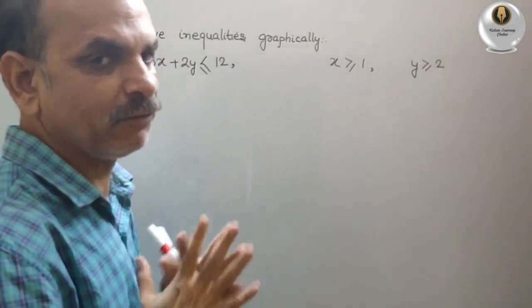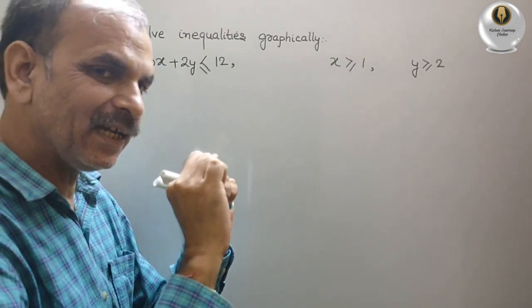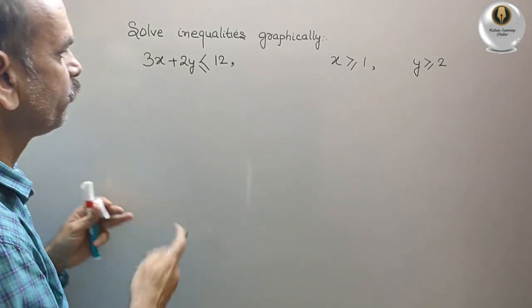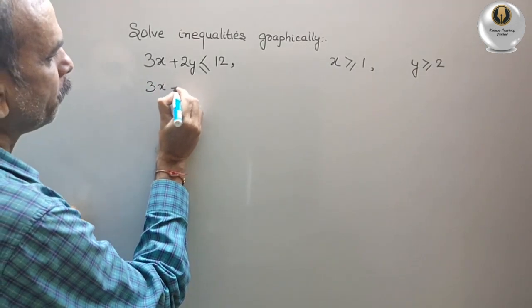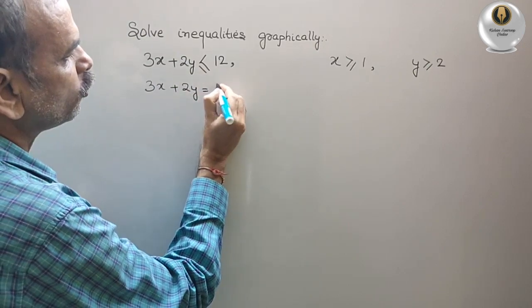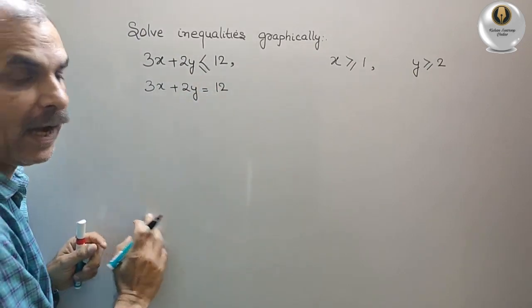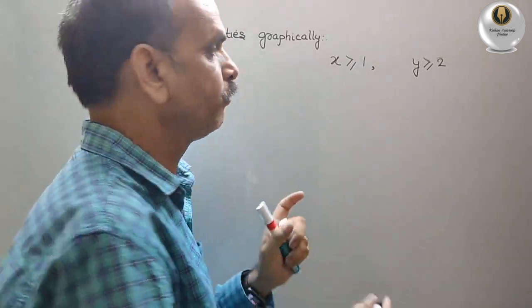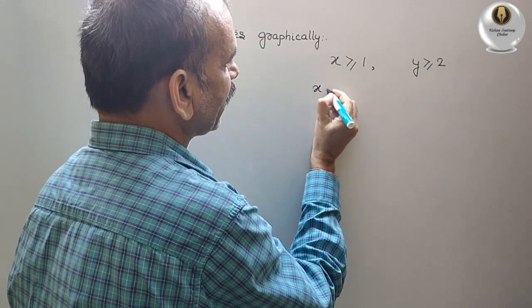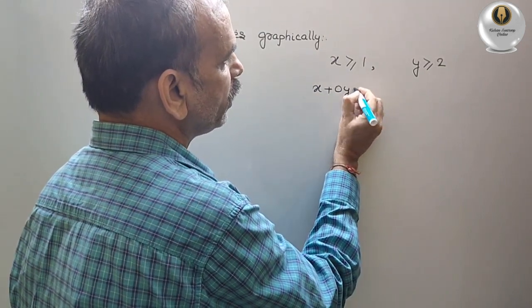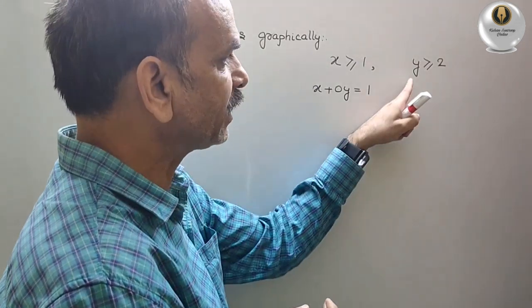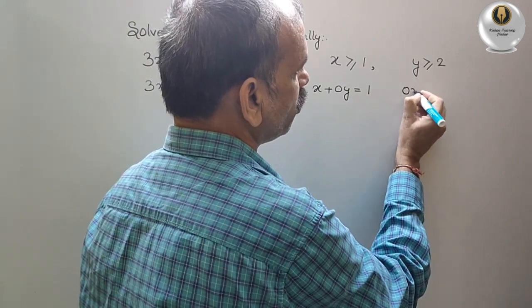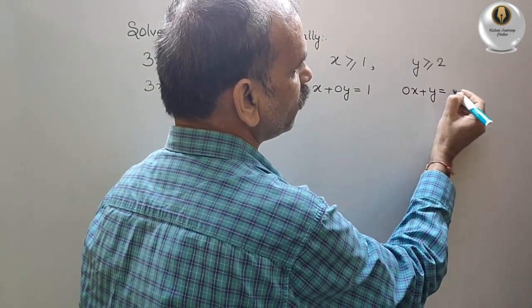They have given three equations, so first we will write them in linear form. 3x plus 2y is equal to 12. Here they have not given y, so we will take 0y — so it is x plus 0y is equal to 1. And here they have not given x, so we will take 0x: 0x plus y is equal to 2.